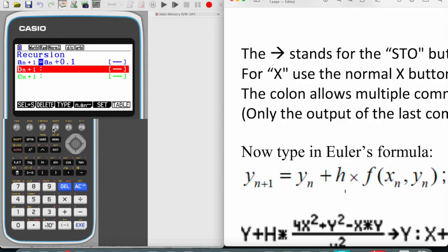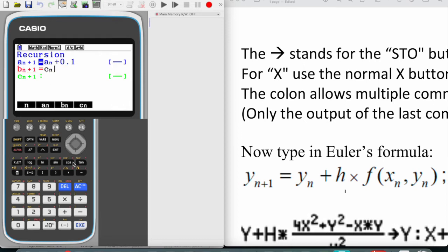Over here we're going to press F4, and we will say that b sub n plus 1 is basically b n, which is the previous y value, plus h which is 0.1 multiplied by the differential equation.